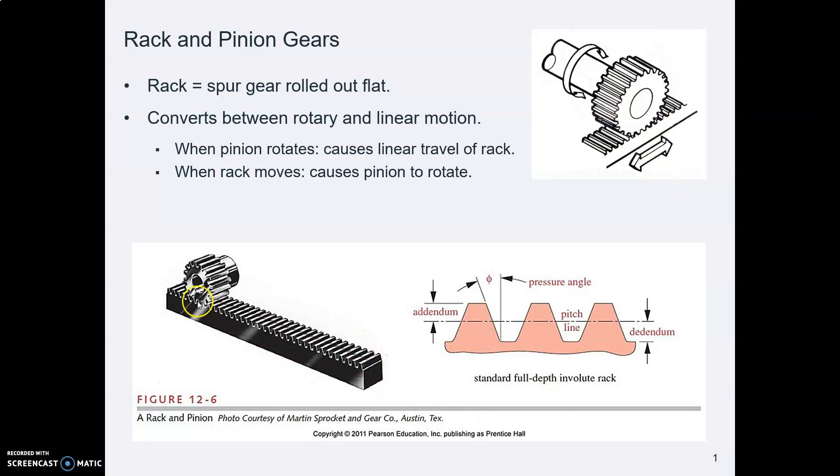And a rack is this flat rectangular looking thing with teeth on it. What a rack is handy for is converting between rotary motion and linear motion, and it can go either way, as this picture at the top illustrates.